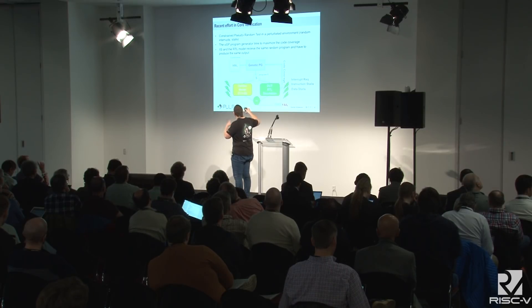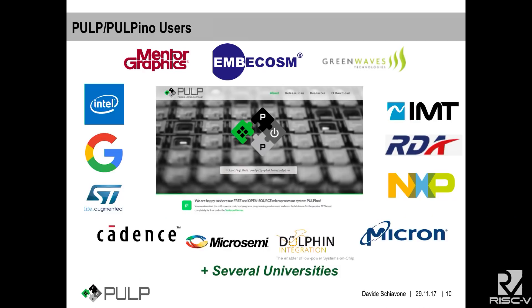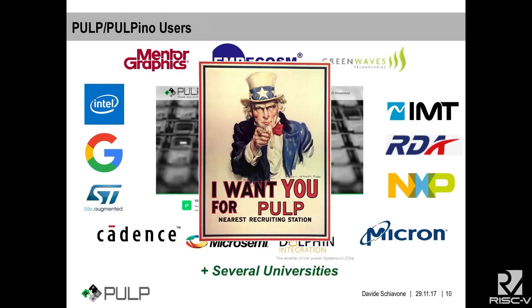PULP and PULPino are not just toys. Several companies are actually using them — some are announcing products based on PULP, others use it for internal exploration, and others for educational purposes. Several universities are also using our cores, either close to our research interests or for other work. We are always looking for collaborations, feedback, bug reports, donations, and IPs in every form.